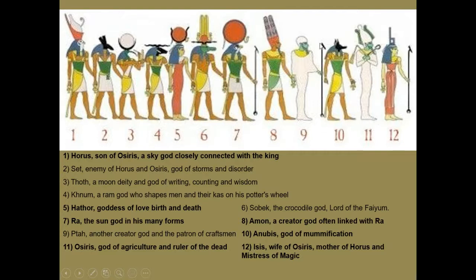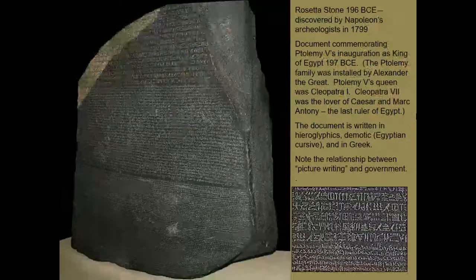Equally important is number ten, the god Anubis. You will also fairly frequently run into depictions of Isis — she's number twelve on our list. She is the wife of Osiris and mother of Horus.